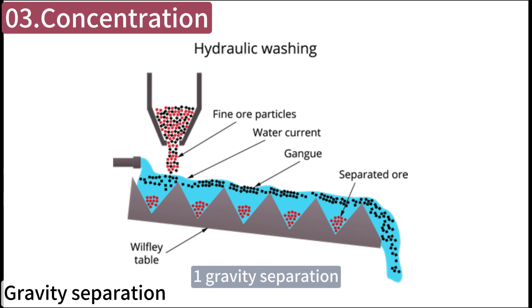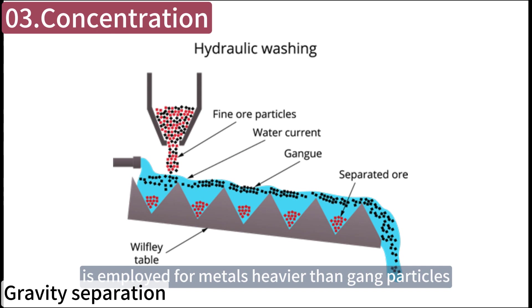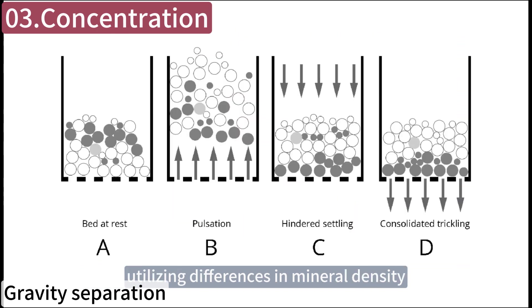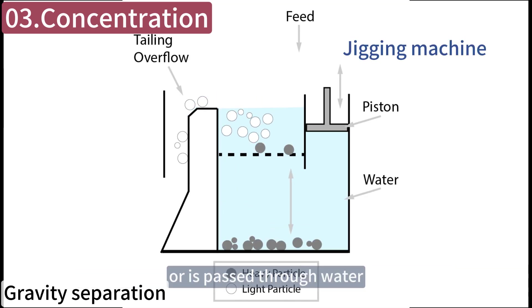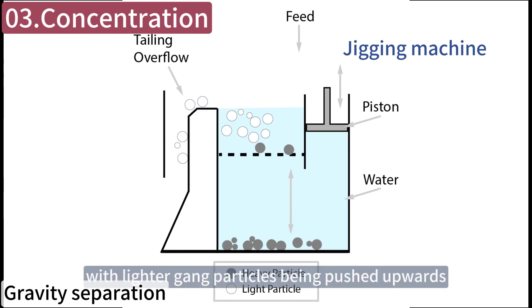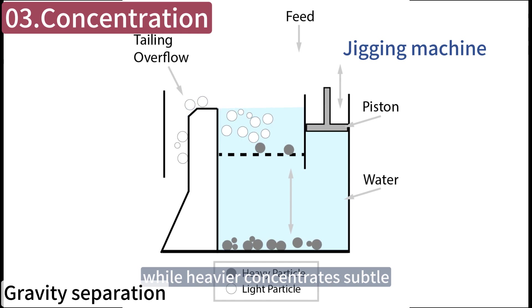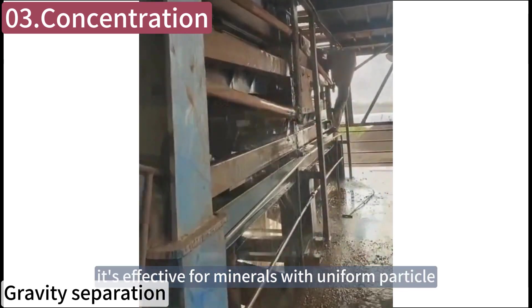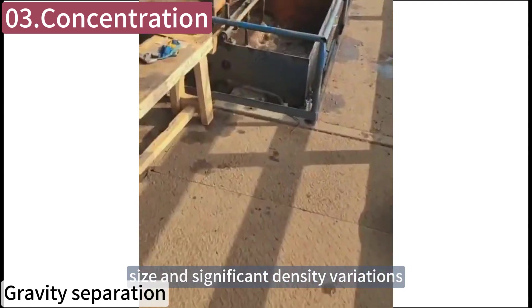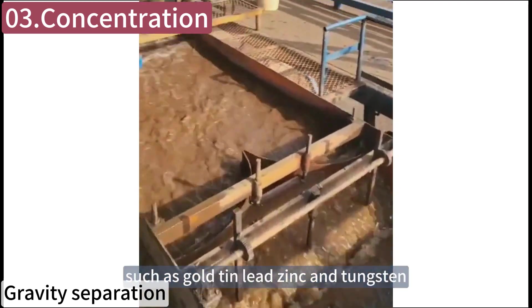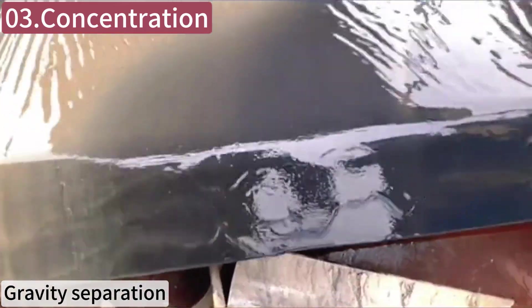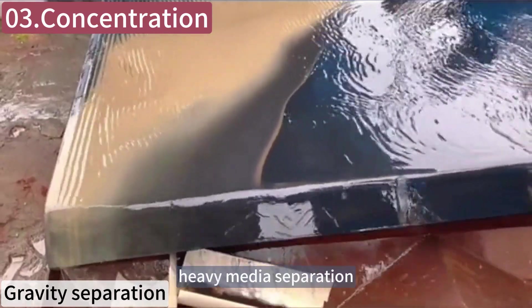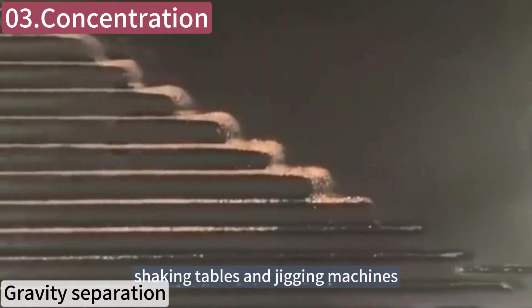Gravity separation, also called hydraulic washing, is employed for metals heavier than gangue particles, utilizing differences in mineral density for concentration. It is one of the oldest mineral separation techniques; ore is passed through water, with lighter gangue particles pushed upward while heavier concentrates settle. It is effective for minerals with uniform particle size and significant density variations, such as gold, tin, lead, zinc, and tungsten, particularly for coarse-grained ore enrichment. Techniques include inclined float separation, heavy-media separation, shaking tables, and jigging machines.